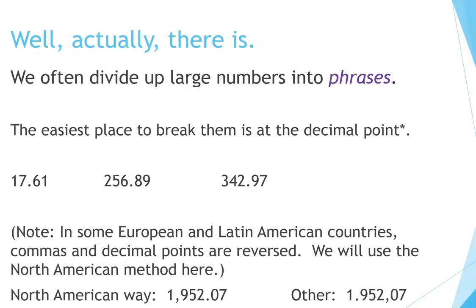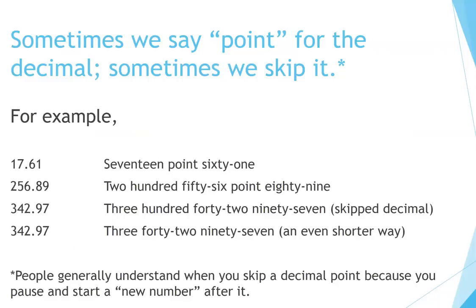Note: in some European and Latin American countries, commas and decimal points are reversed. We will use the North American method here. Sometimes we say 'point' for the decimal, and sometimes we skip it — for example, 17 61, 256 89, 342 97. People generally understand when you skip a decimal point because you pause and start a new number after it.